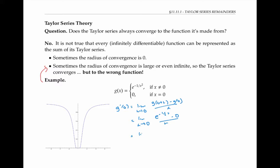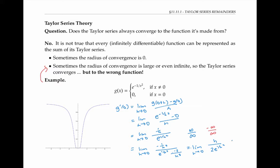We can rewrite this as the limit as h goes to zero of one over h divided by e to the one over h squared. As h goes to zero from the positive side, this is an infinity over infinity indeterminate form. And as h goes to zero from the negative side, this is a negative infinity over infinity indeterminate form. In either case, we can use L'Hôpital's rule to replace this limit with the limit of the derivatives, which simplifies to a zero over infinity kind of limit, which is equal to zero.